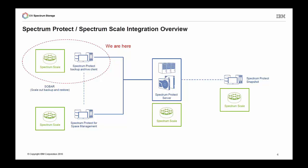Then on the left hand at the bottom, you can see Spectrum Protect for Space Management, which is also known as HSM for UNIX. This has also close integration with Spectrum Scale and acts as an external storage pool of the Spectrum Scale information lifecycle management engine. On the left hand at the top, this is what we talk about today: the integration between the Spectrum Protect Backup Archive Client and Spectrum Scale, and different ways to protect your Spectrum Scale file system. We also have another integration called SOBAR, a scaling out disaster recovery solution, and you can take advantage of SOBAR for your backup and archive environment for Spectrum Scale as well.